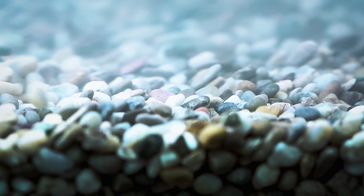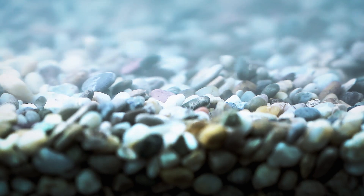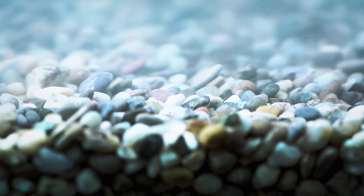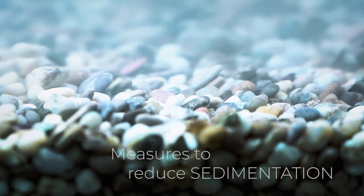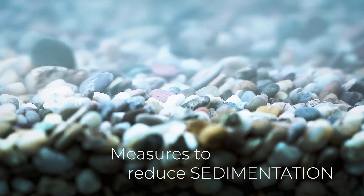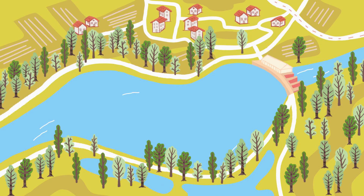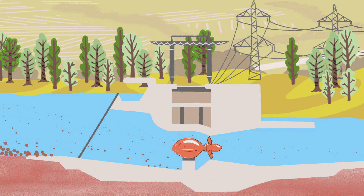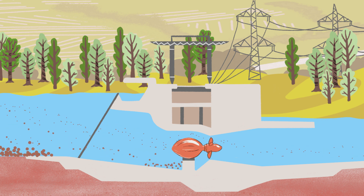These are only three examples of how to reduce riverbed erosion. Now let's take a look at the opposite process. When the flow velocity of the river slows down, sedimentation increases, especially upstream of transverse structures. This can lead to a sediment deficit downstream. To compensate these effects, we need an innovative sediment management.